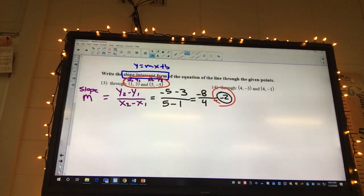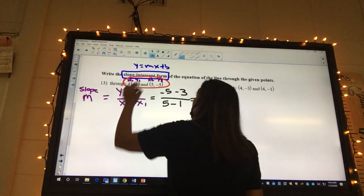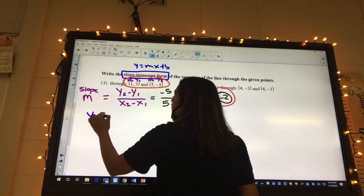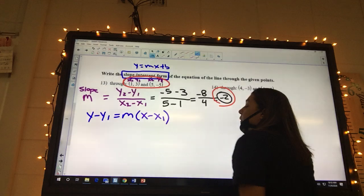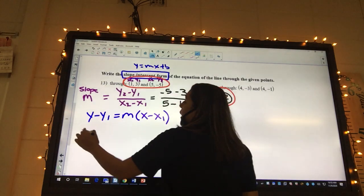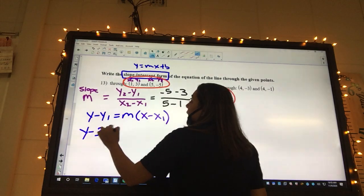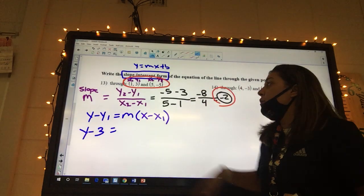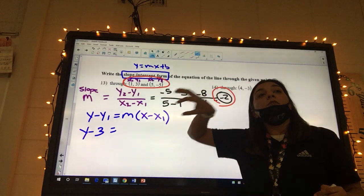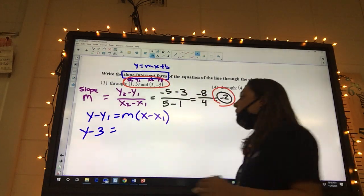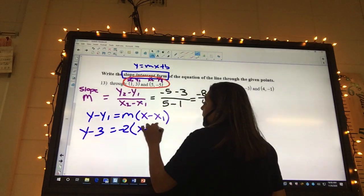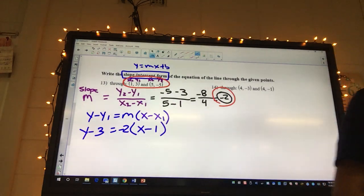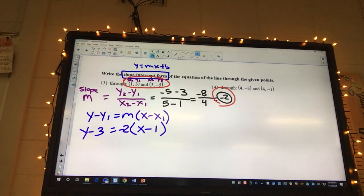We have points and a slope, so point slope. We're going to have y minus y1 equals m times x minus x1. It's going to be y minus my y1 is 3. This is why it's really important to label, because you use a certain y1 up here, that means you need to use the same y1 down here. Don't be lazy, that's what it is, it's laziness.